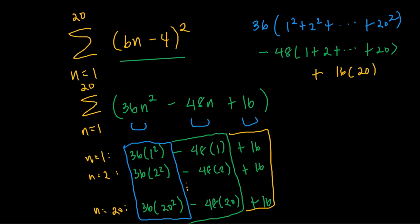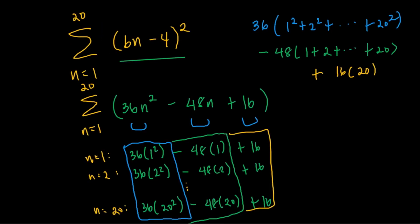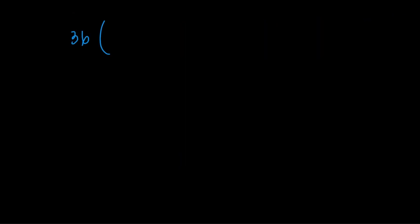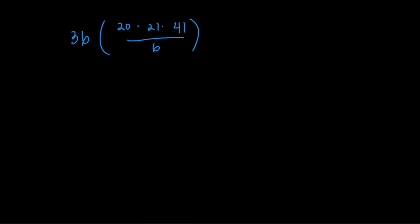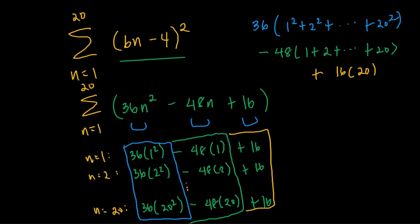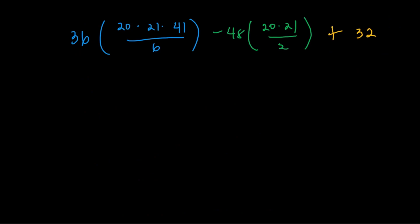So all we have to do is just work on this sum. So it's just going to be 36 times... well, we do have the formula for the sum of the first n positive perfect squares. So 1 squared plus 2 squared all the way until 20 squared. That's 20 times 21 times 41 divided by 6. For the next one, minus 48 times the sum of the positive integers from 1 to 20. So minus 48 times 20 times 21 divided by 2. And then the 16 times 20, it's just going to be 320. So what we have to do is just work on this sum.